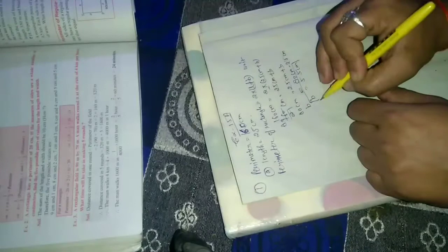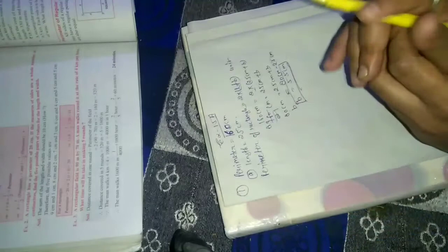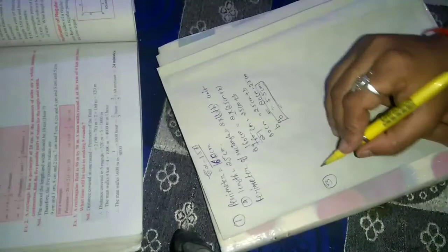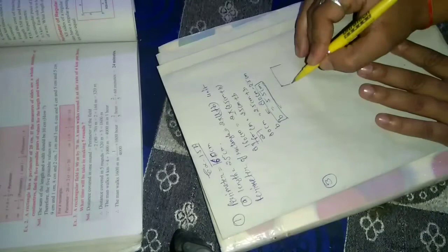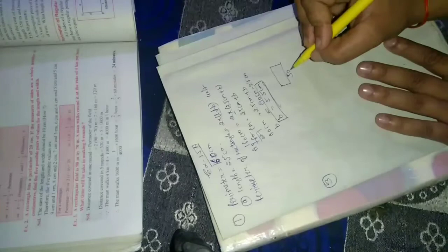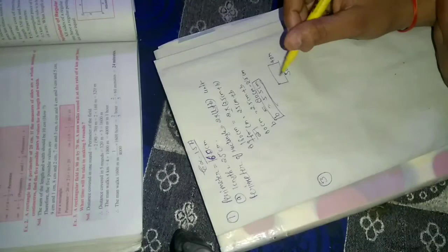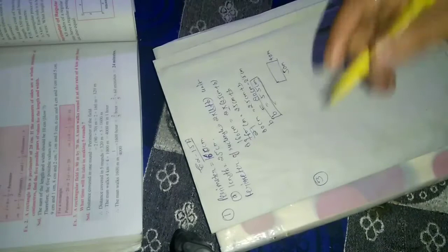Similarly part b and c. Second question, perimeter with width and length, same question. Question number third. A rectangular field is 50 meter by 40 meter. Mahesh goes 10 times round it. 10 rounds, distance...